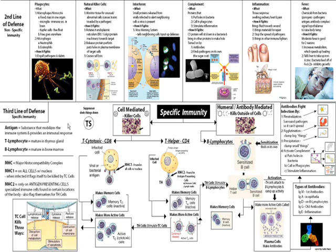MHC2 cells are found only on antigen-presenting cells, or APC cells, and these are only on specialized cells found in certain places of the body. They stimulate T helper cells, also known as CD4.